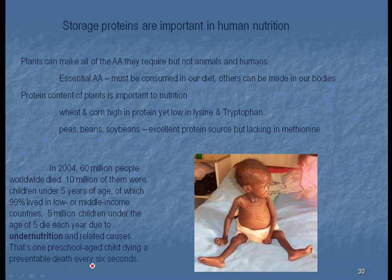People, through trial and error, through their shamans and medicine men, have learned that you need to combine certain foods together. Wheat and corn, for example, are high in protein but low in lysine and tryptophan. Beans, peas, and soybeans are an excellent protein source but have methionine. Different cultures have learned that we need to put these together — we need to have corn and beans together, a combination of wheat and peas.